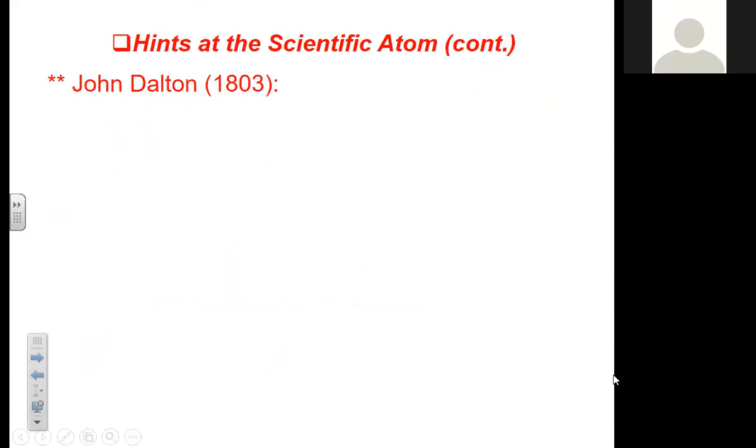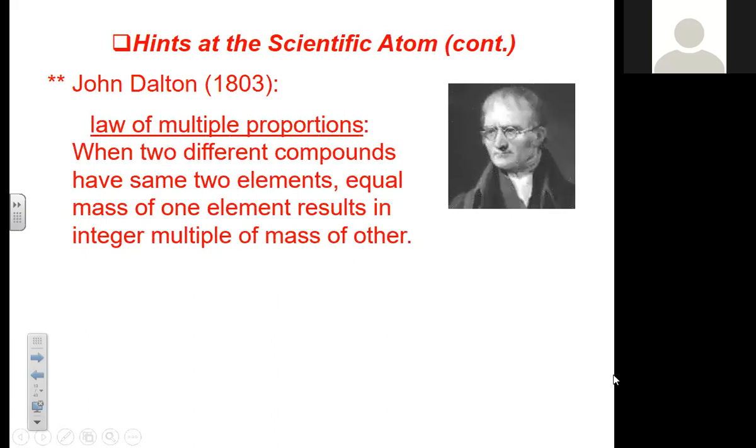That led us to our first atomic theory. First atomic theory is a man named John Dalton. So John Dalton in 1803, 217 years ago, this man came up with the first atomic theory. The law of multiple proportions.